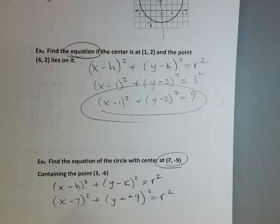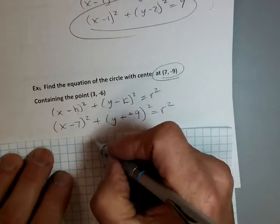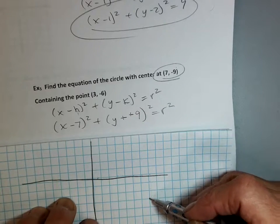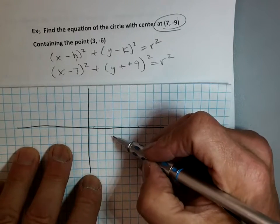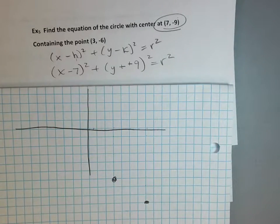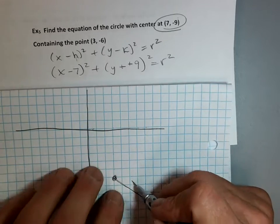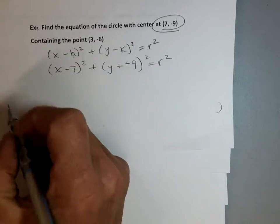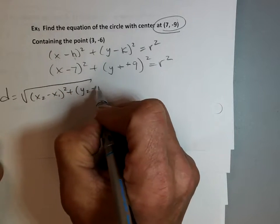I don't know the radius, so maybe if I graph it I might be able to find out what the radius is. I'm going to put this on my graph paper and I'm going to be at seven, then down nine. That is my center. And I've got a point at three, negative six. What I need to know is this length here — the radius. A long time ago in algebra, you guys learned this thing called the distance formula with two points. The distance formula was: square root of (x₂ minus x₁) squared plus (y₂ minus y₁) squared. And that distance would actually be our radius.